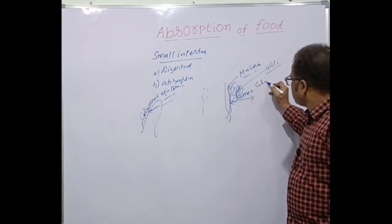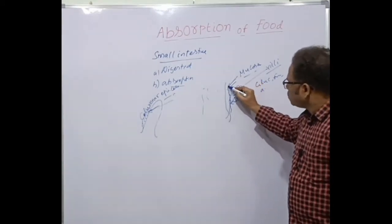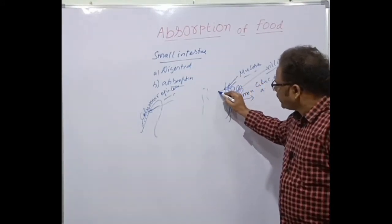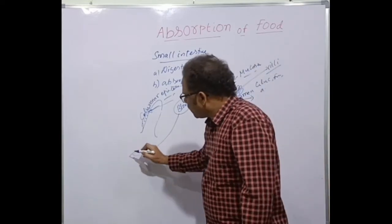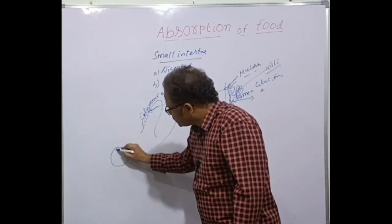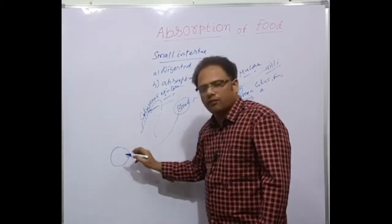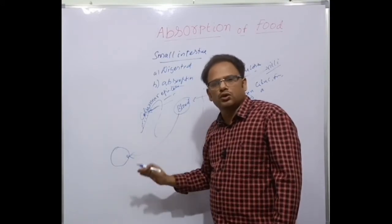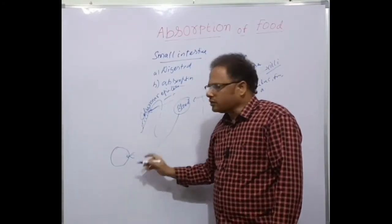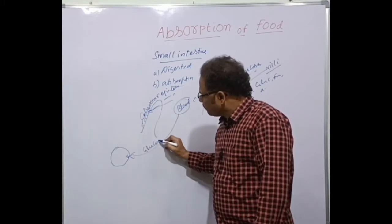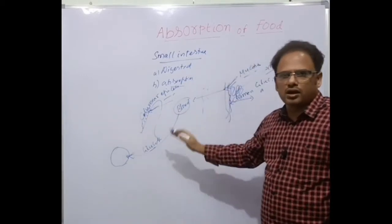Digested food particles like glucose, fructose, galactose, amino acids, etc. are moving through the mucosal epithelium. They must be absorbed into the blood, and these absorbed food particles must be transported to the cells and tissues. This is because catabolism — oxidation of food — for example oxidation of glucose to release energy in the form of ATP, takes place inside the cells.